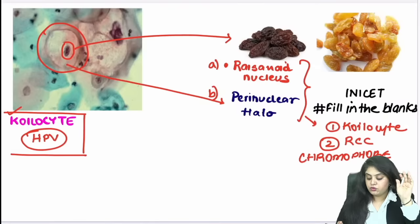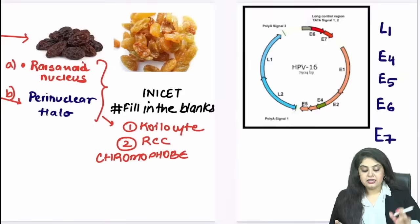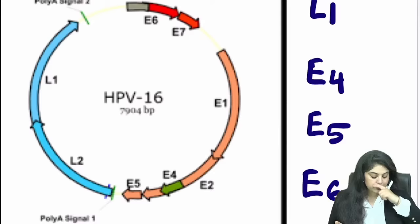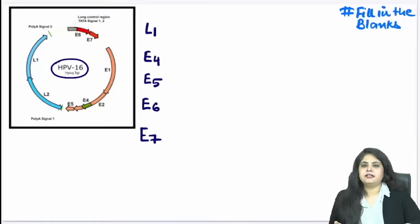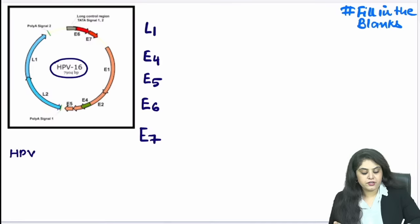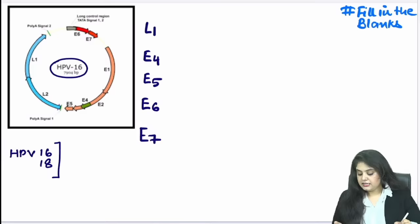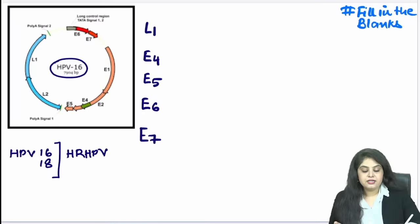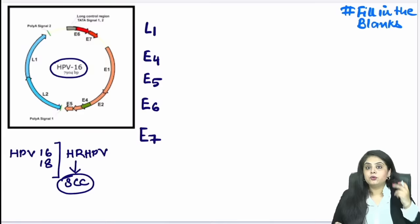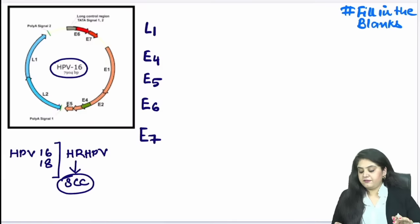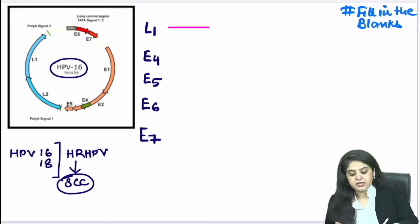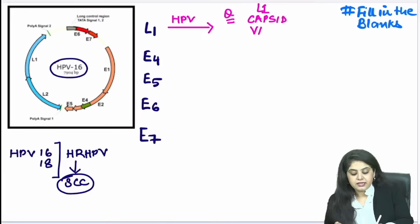Now let us do the microbiology fill-in-the-blanks. Here you have an HPV-16 diagram. HPV-6 and HPV-11 have the same diagram, but the significance of HPV-16 and HPV-18 is that these are high-risk human papilloma viruses — they have a much higher chance of causing squamous cell carcinoma. Now fill in the blanks for L1, L2, E4, E5 one by one. L1: it is the capsid, and the capsid is the component from which the vaccine is formed.